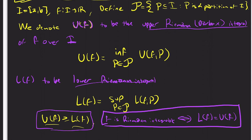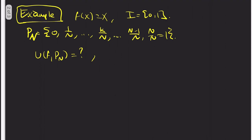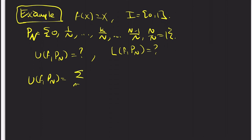Our goal now is to show that for f(x) = x, the lower limit equals the upper limit. Let's take our interval to be [0,1], and define P_N to be the uniform mesh: 0, 1/N, k/N, …, 1. Then U(F, P_N) — we just follow the definition — this is the supremum over the nth sub-interval of f(x) times x_n minus x_{n−1}. It's a uniform mesh, so this is 1/N times the sum.